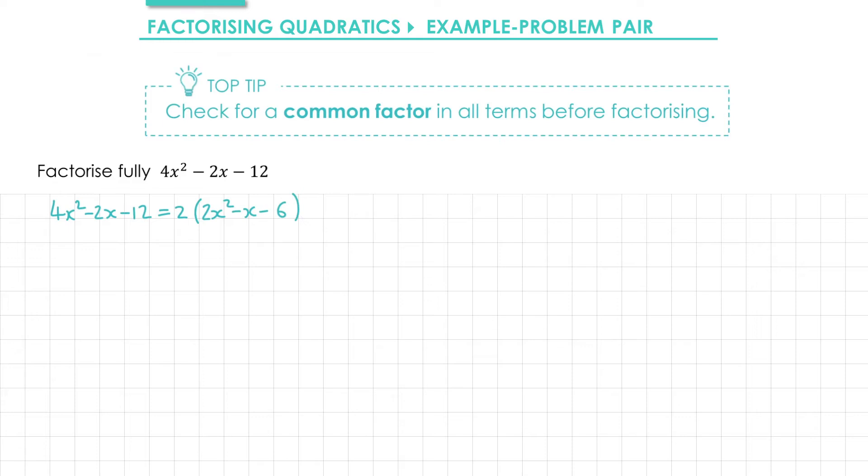Now that we've done that, we can apply the cancelling method to 2x² - x - 6. We want two numbers that multiply together to give negative 12, and we want two numbers that add together to give minus 1. The numbers we're looking for are negative 4 and 3.